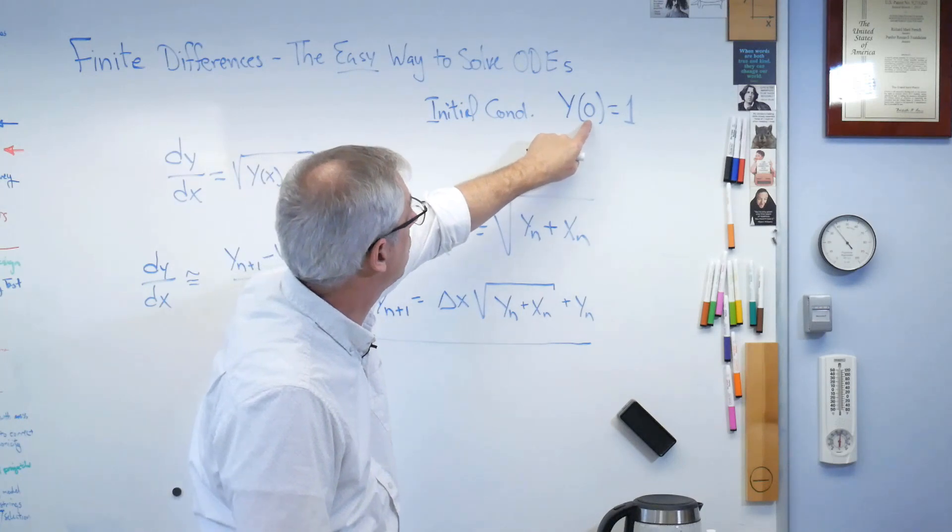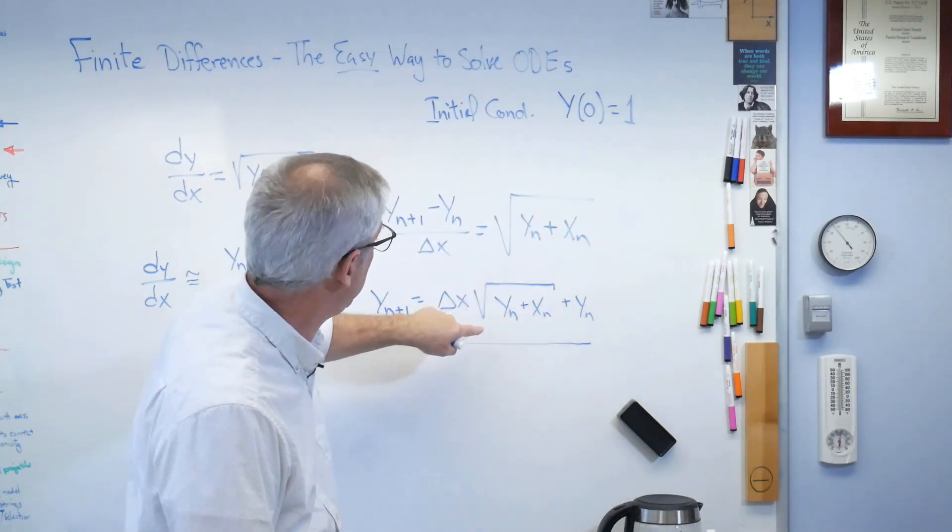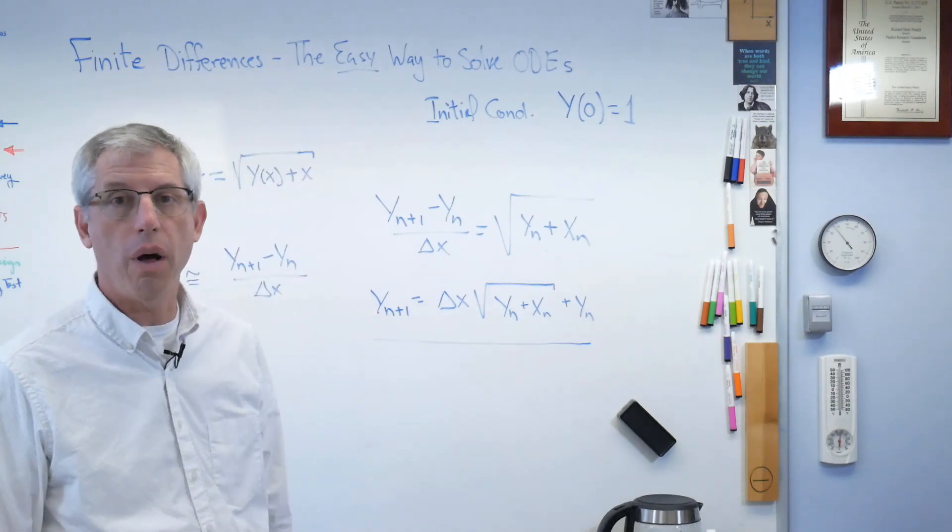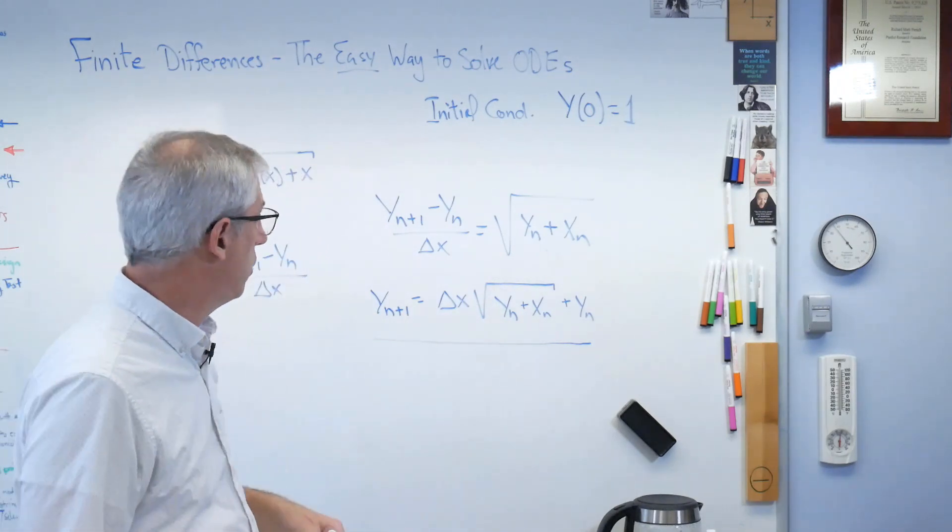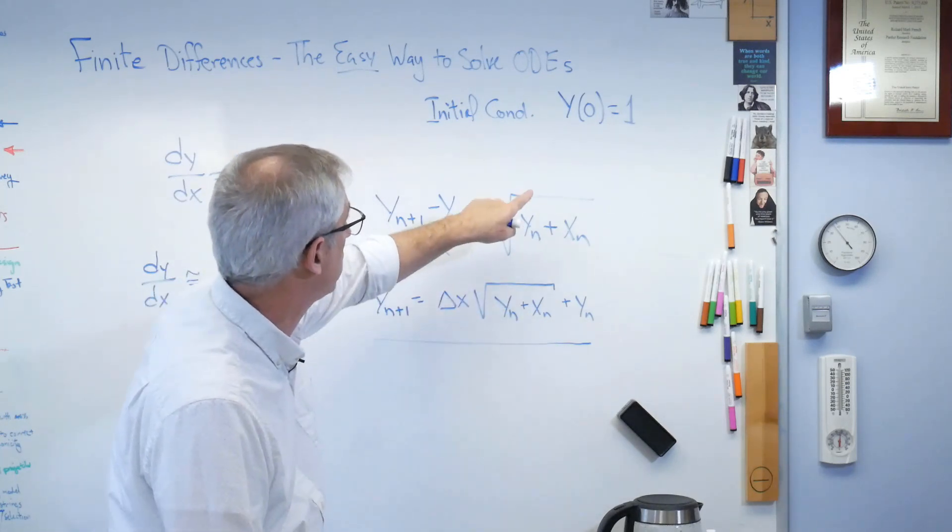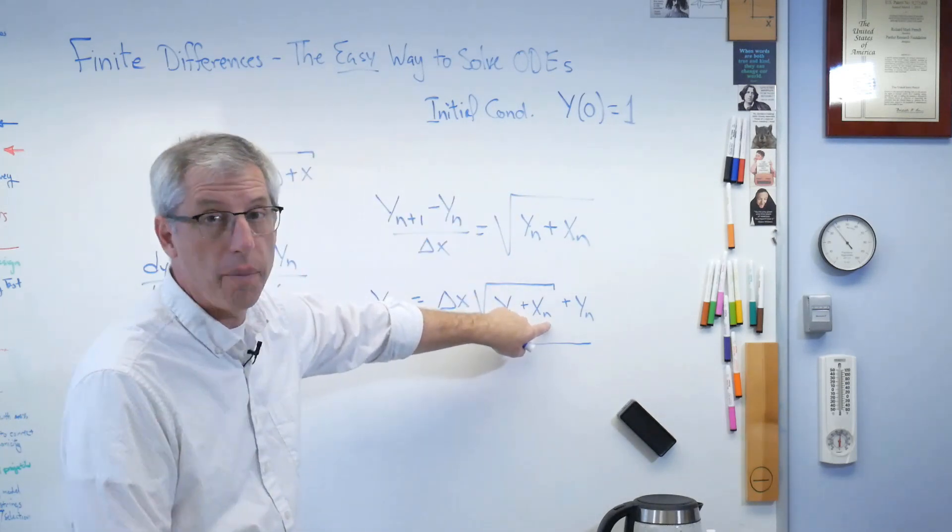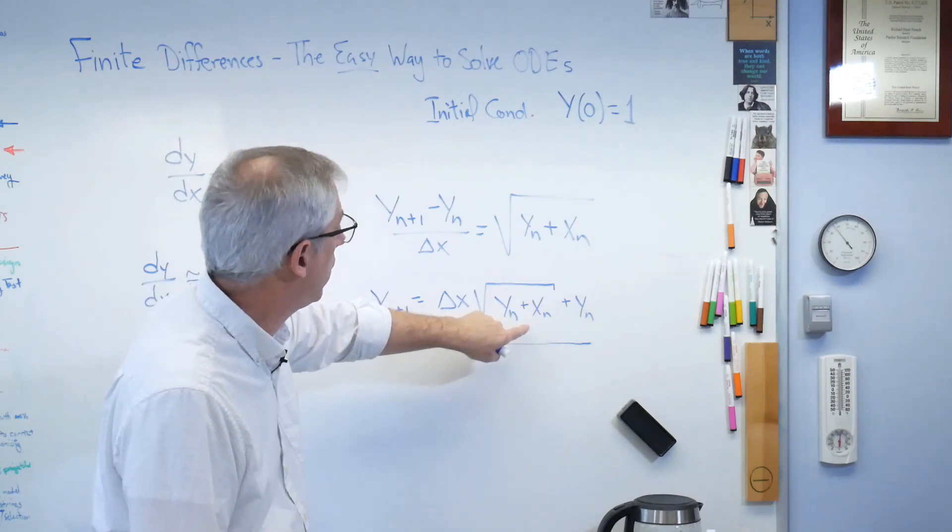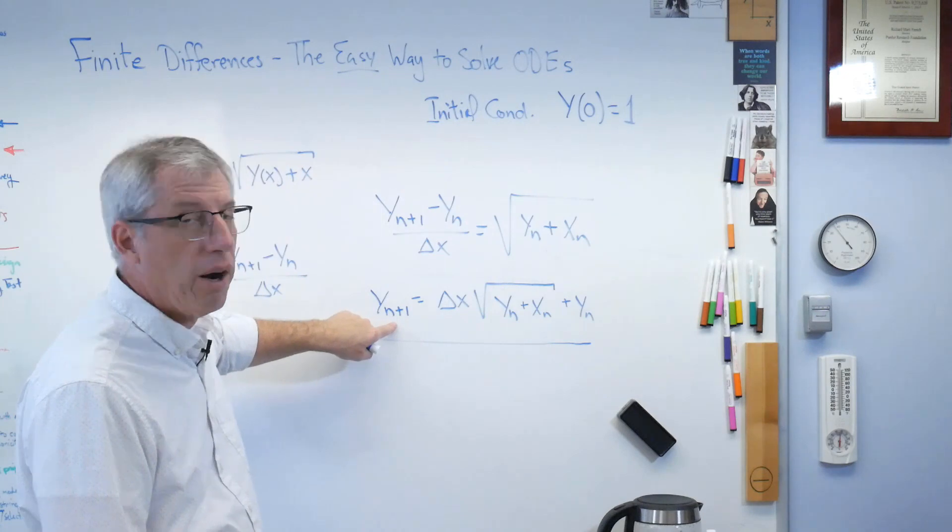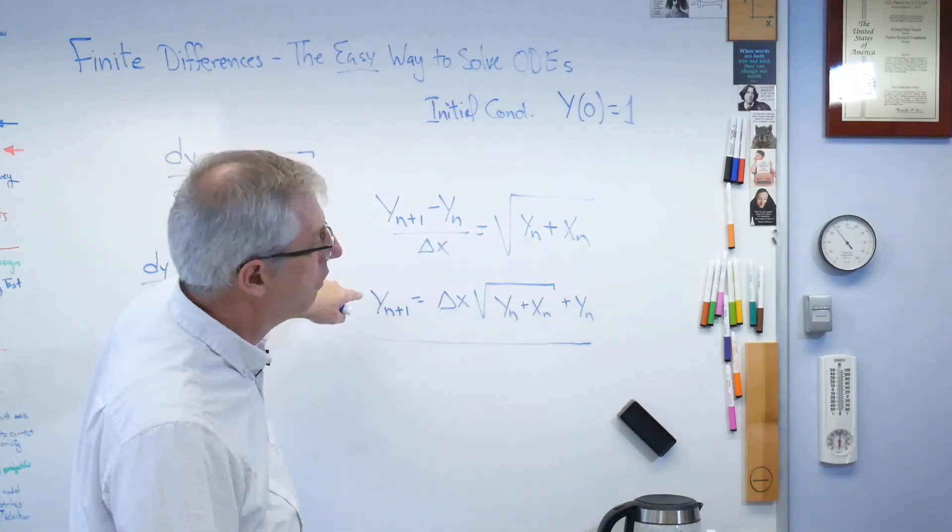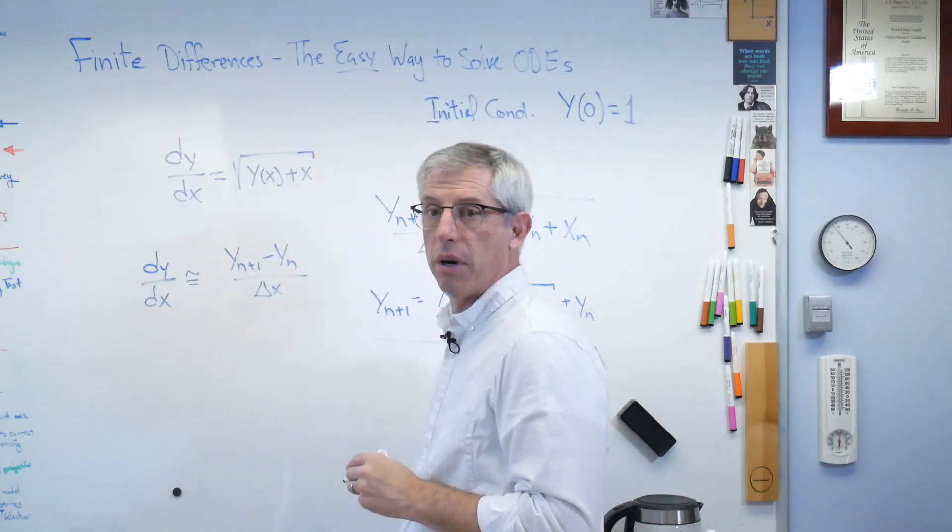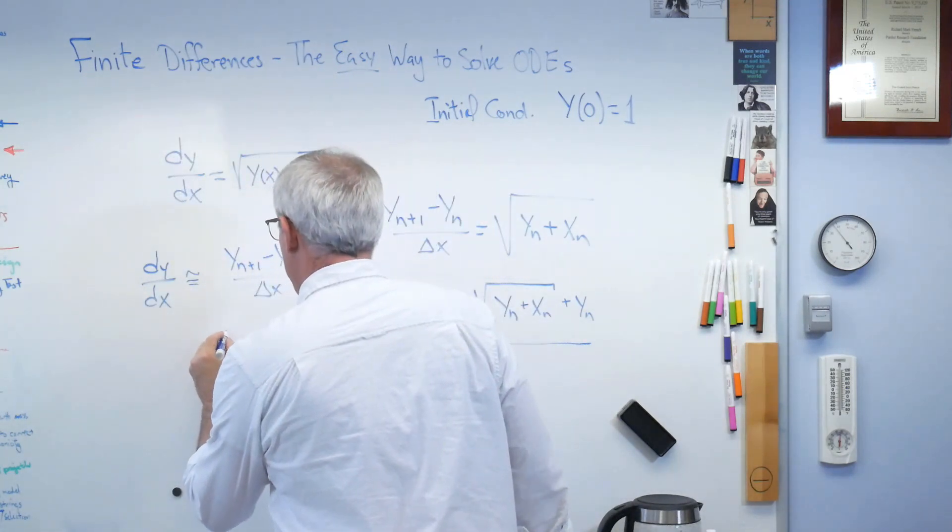All right. There it is. y n plus 1 equals y n plus delta x times the square root of y n plus x n. That is all you need. We'll start at n equals 0. Well, x0 is 0, y0 is 1. So plug all those in. Now I know everything on the right side. I'll figure out y1. Index the counter to 1. Now I know what x1, because if I know delta x, I know what all my x's are. I know x1, I know y1, because I just figured it out. There it is there again. Figure out y2. Go back through here. Figure out y3. Go back through here. Figure out y4.